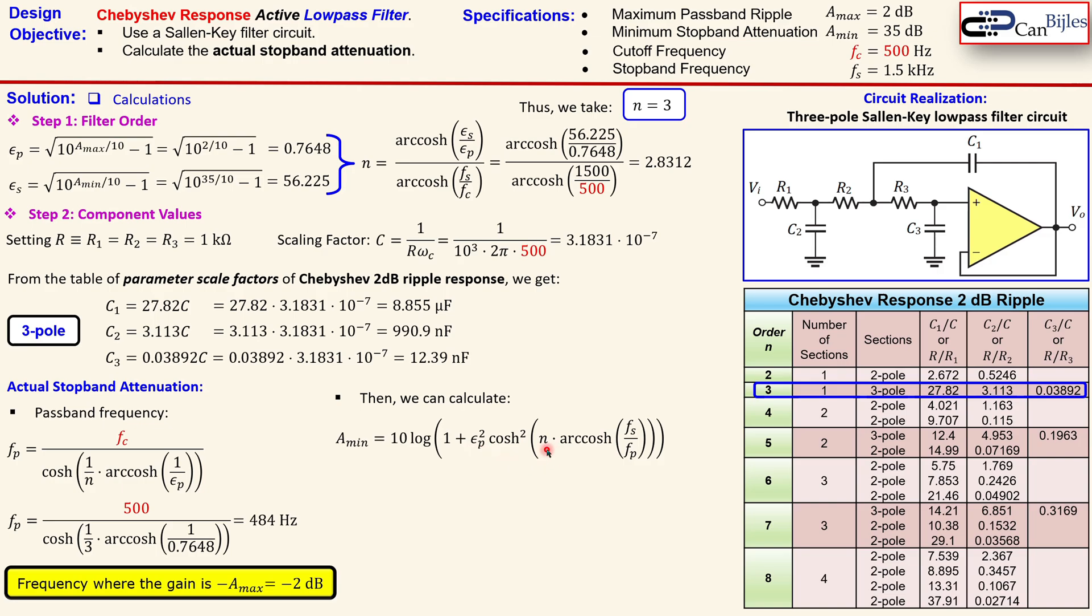The stopband frequency, and the passband frequency. We have everything, so we can just substitute that in here. You get here 3, 1.5 kHz, so 1,500, 484 from the passband frequency here, and also the epsilon p here.